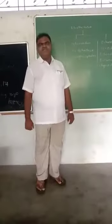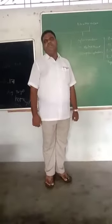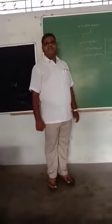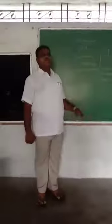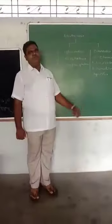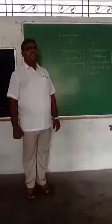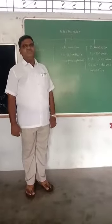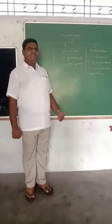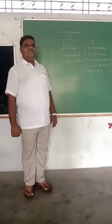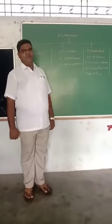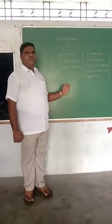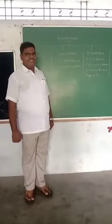The second class is Ophiuroidea. Ophis means serpent-like, and the arms show serpent-like, snake-like movement. In these organisms also, five arms are present. In some organisms, the arms are bifurcated, and these arms bear small spines.